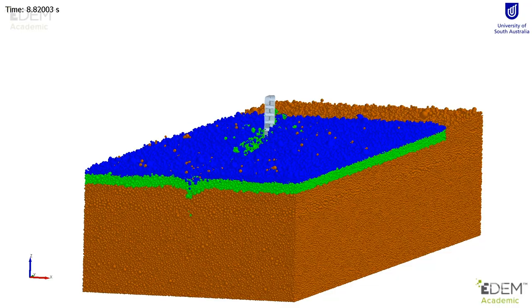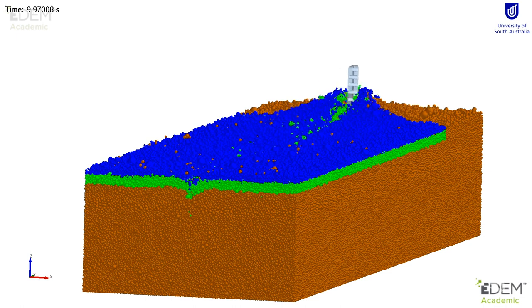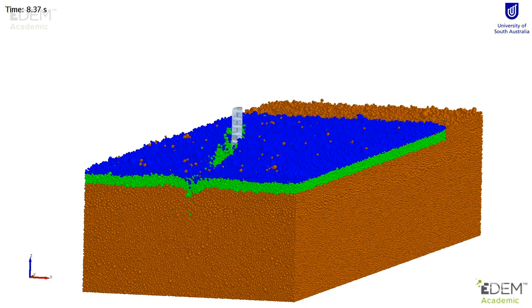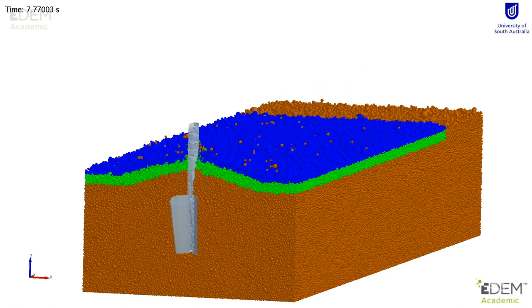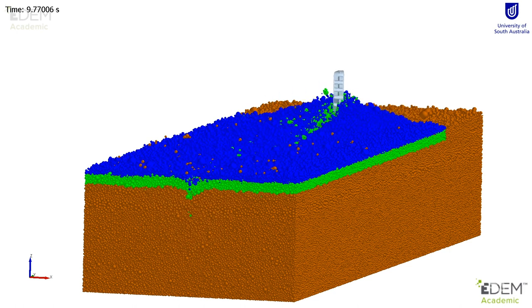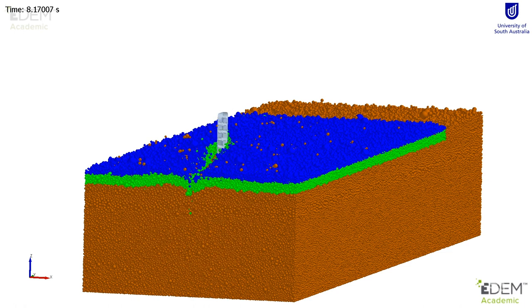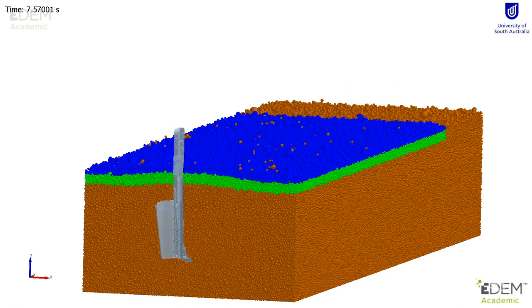With the calibration done, the simulation is run. In this case, it's a deep ripper tine with an inclusion plate operating at seven kilometres per hour at a depth of 600 millimetres. In this simulation video you can see the performance of a deep ripper inclusion plate and how it basically incorporates the top 100 millimetre soil. As you can see, it's not really doing a good job at high speed.